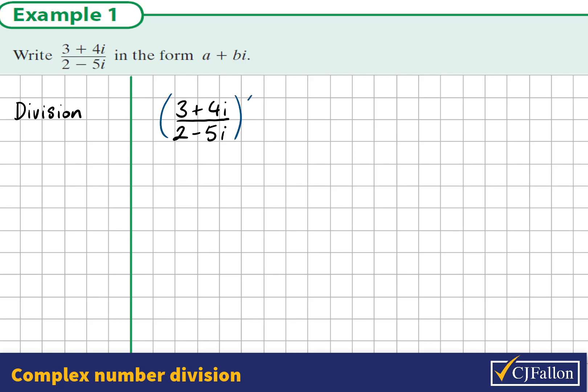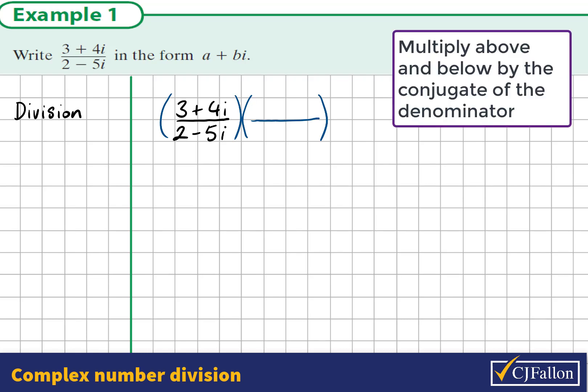To do this we're going to multiply above and below by the same number, in effect multiply by 1, that would turn the denominator real. The number we use here is the conjugate of the denominator. The conjugate of 2 minus 5i is 2 plus 5i. So we multiply above and below by 2 plus 5i. This is the important thing to remember in complex division. You multiply above and below by the conjugate of the denominator.